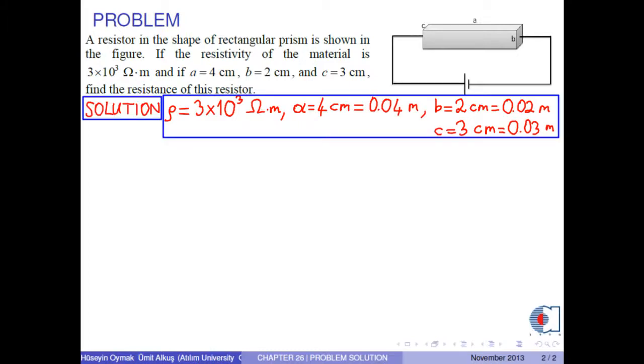Remember that the resistance of any resistor can be found by this formula: rho times L over A.